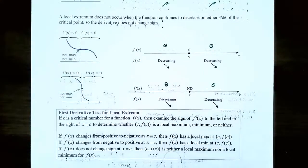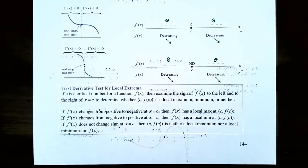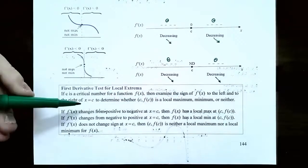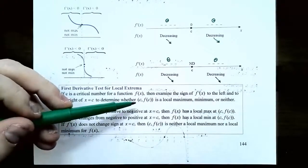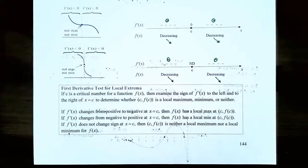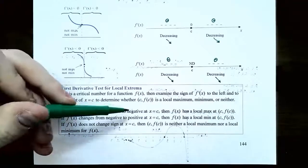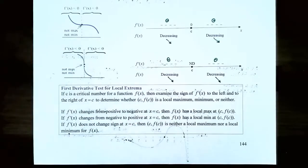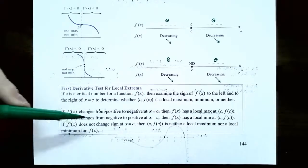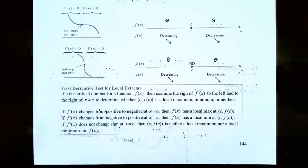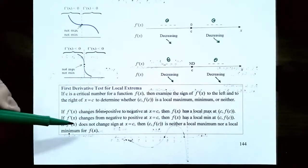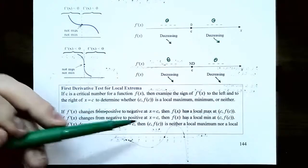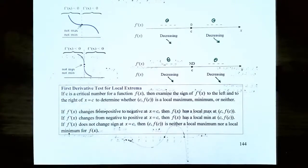To summarize, this is the first derivative test for local extrema. If c is a critical number for f(x), examine the sign of the derivative to the left and right of x = c to determine if the critical point (c, f(c)) is a local maximum, local minimum, or neither. Case 1: if f'(x) changes from positive to negative at x = c, then f(x) has a local maximum at (c, f(c)). Case 2: if f'(x) changes from negative to positive at x = c, then f(x) has a local minimum. Case 3: if f'(x) does not change sign on either side of x = c, then the critical point is neither a local maximum nor a local minimum.